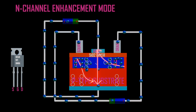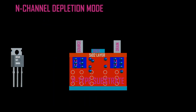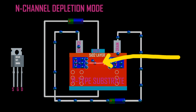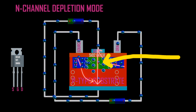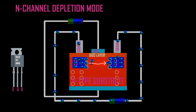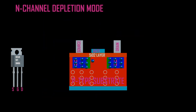When a negative potential is applied at the gate, an electric field is formed such that holes in the P-substrate move towards the gate and electrons near the gate move towards the base of the MOSFET. This facilitates the reduction in the number of electrons at the channel, hence it is called N-channel depletion mode.